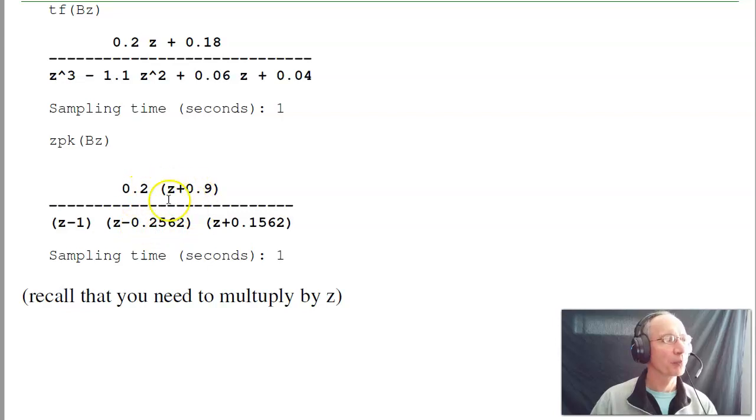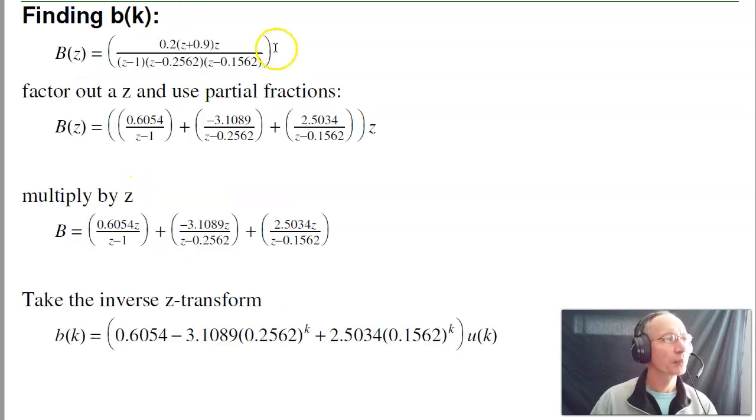Here's my z-transform of B having the ball in transfer function form. This is in factored form. Factored form is actually much more useful. To find B of k, I'll take the factored form, multiply by z, now take the inverse z-transform. To do that, I'll pull the z outside because my table of z-transforms has z over z minus 1, z over z minus A. Do your partial fraction expansion, multiply through by z again. Now I can just use the table. This has the inverse z-transform of 0.6054 minus 3.1 times 0.259, 0.256 to the k, plus 2.5 times 0.15 to the k for time positive. There's my answer. Not too bad using z-transforms.